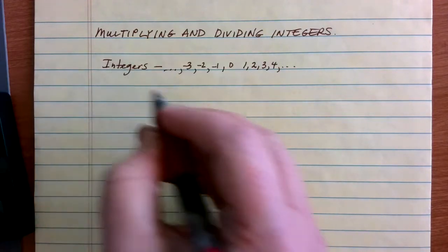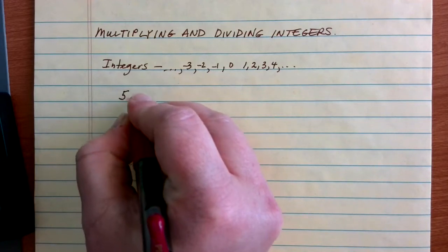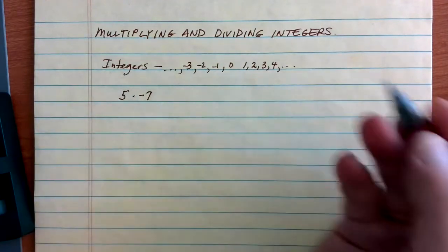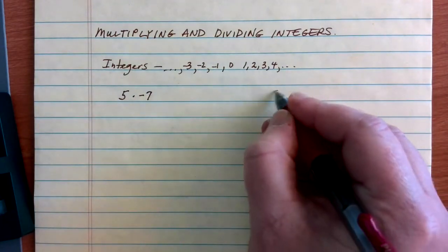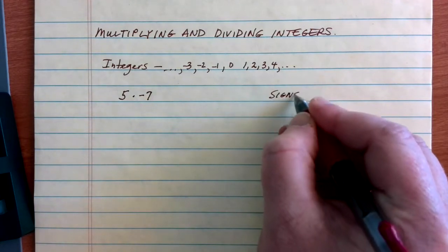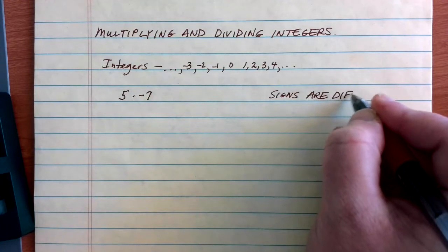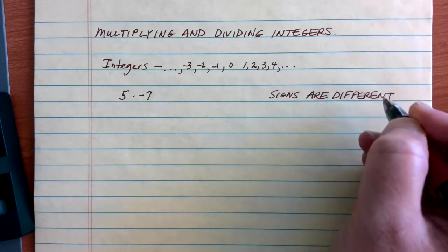When we're multiplying and dividing integers, let's consider a problem like 5 times negative 7. In this case, we're doing multiplication. One of our values is positive and one is negative. When our signs are different, the answer to my problem is going to be always negative.